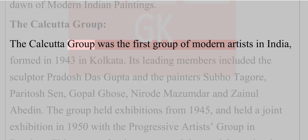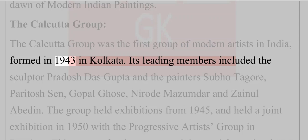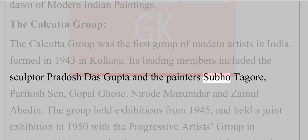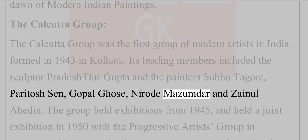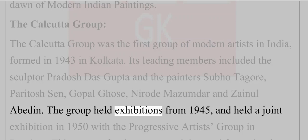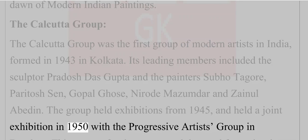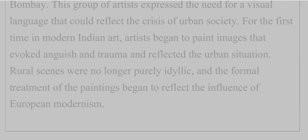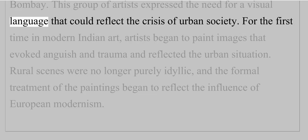The Calcutta Group was the first group of modern artists in India, formed in 1943 in Kolkata. Its leading members included the sculptor Pradosh Das Gupta, and the painters Subho Tagore, Paritosh Sen, Gopal Ghose, Nirode Mazumdar, and Zainul Abedin. The group held exhibitions from 1945, and held a joint exhibition in 1950 with the Progressive Artists Group in Bombay. This group of artists expressed the need for a visual language that could reflect the crisis of urban society.